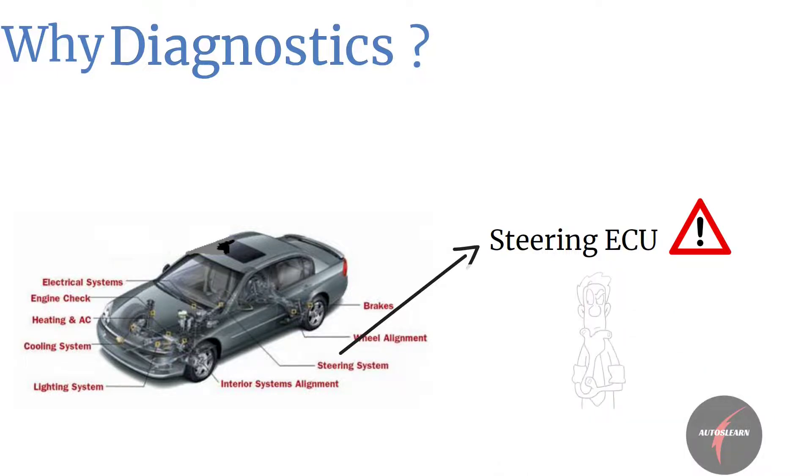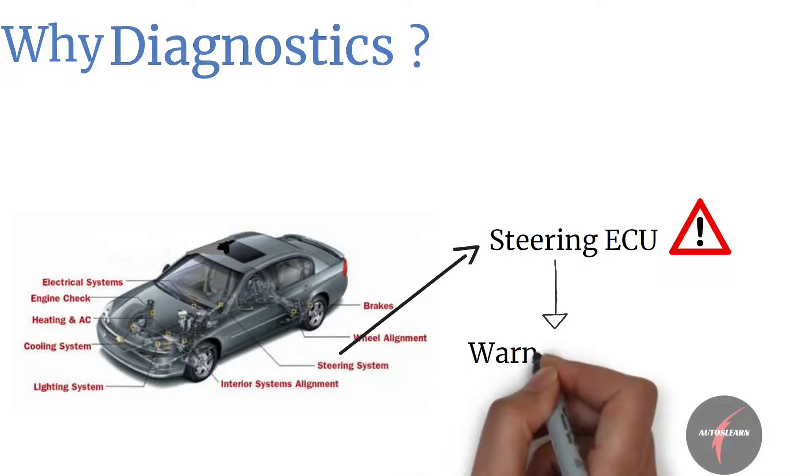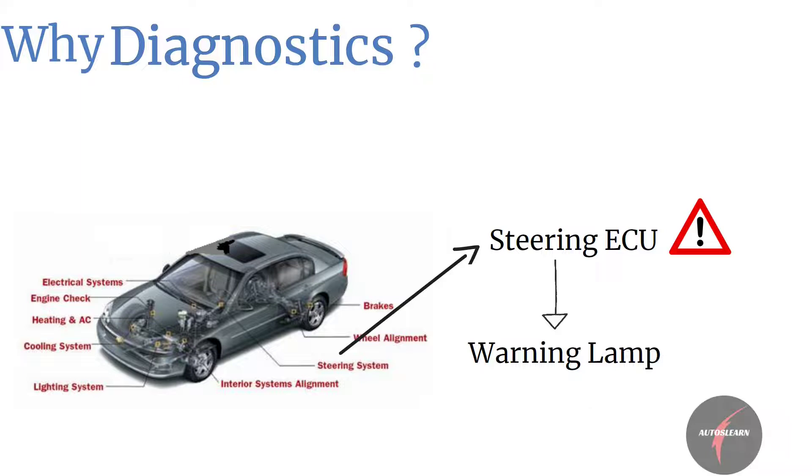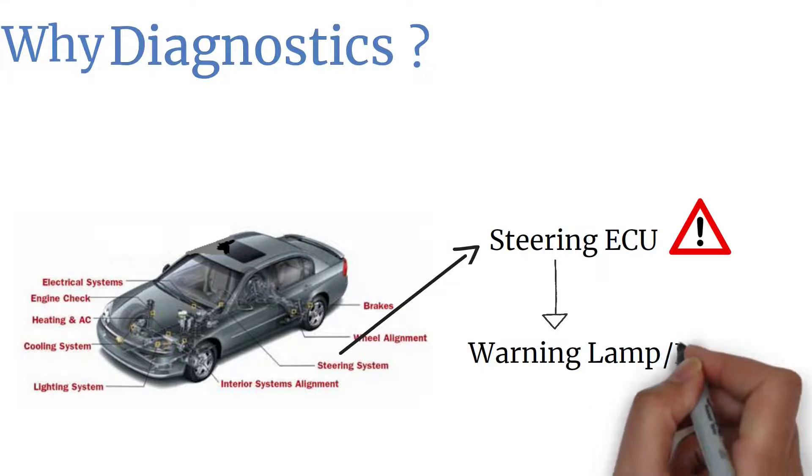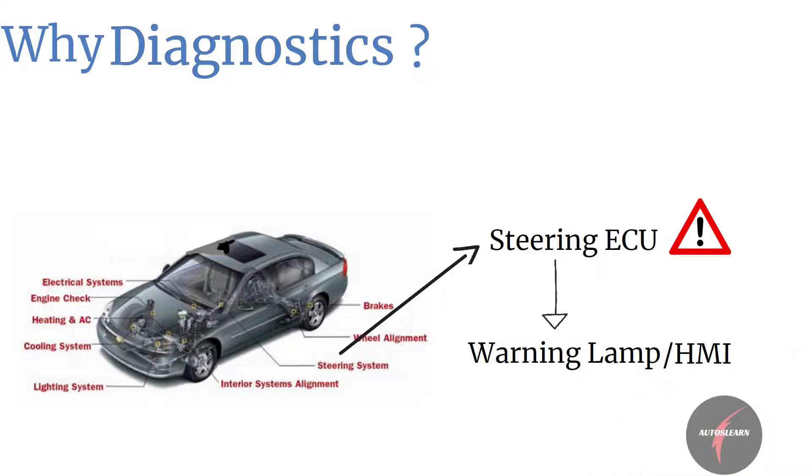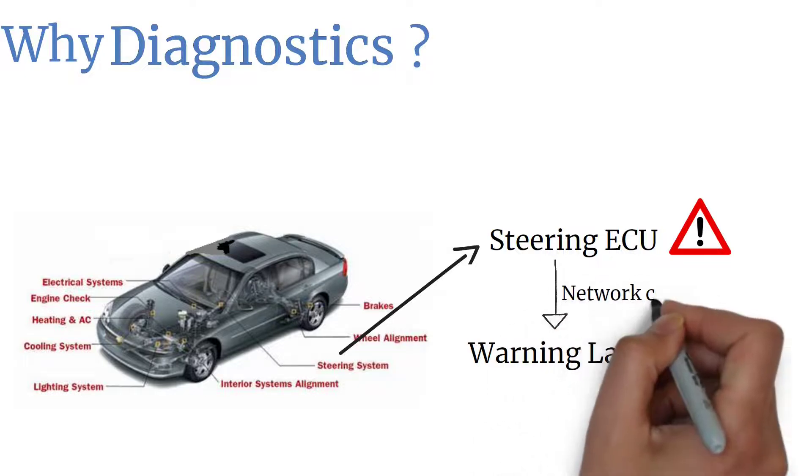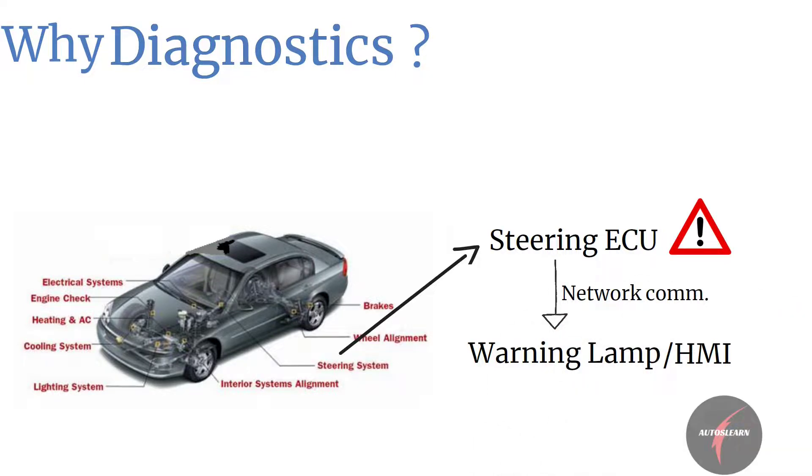Let me tell you the usual way any ECU communicates such kind of error. It would communicate to the driver through a warning lamp. Some cars could also support HMI which might display the error. But wait a sec, how did the lamp get to know that the steering is faulty? That's through network communication. The ECU controlling the lamp would get the information through the network that the steering ECU is faulty.